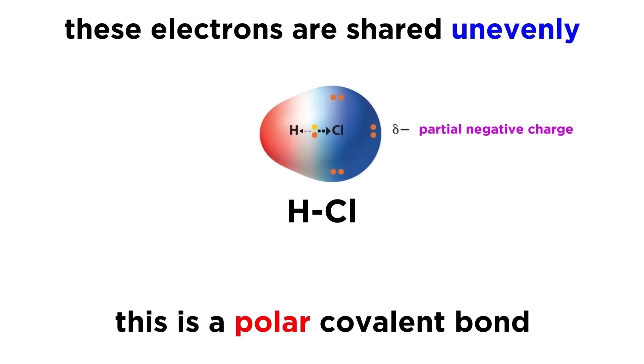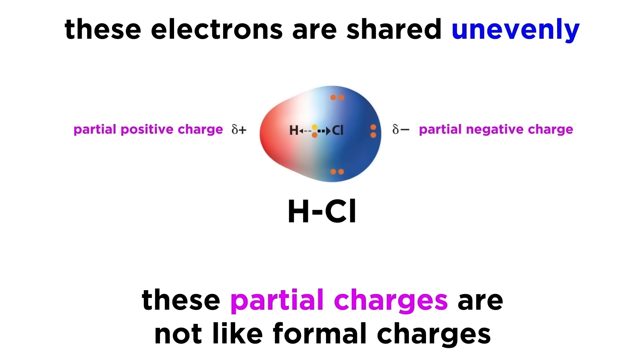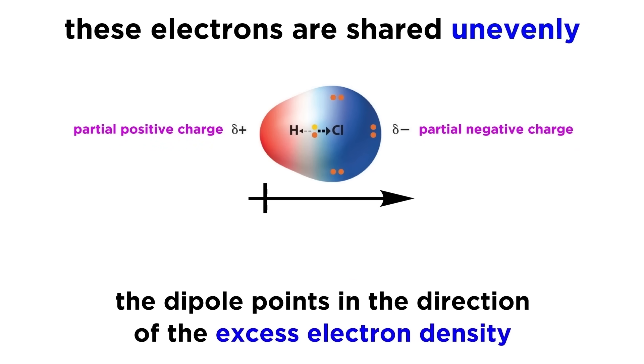For a polar covalent bond, we can denote which atom holds the electron excess by labeling with a delta minus symbol. The electron deficient atom will be delta plus. These are partial charges, which we can almost think of as fractional charges, meaning some fraction of a plus one or minus one charge. We can draw the dipole with an arrow, putting another line over the side of the arrow toward the electron deficient side of the molecule, almost like a plus symbol, and the arrow will point toward the region with electron excess.